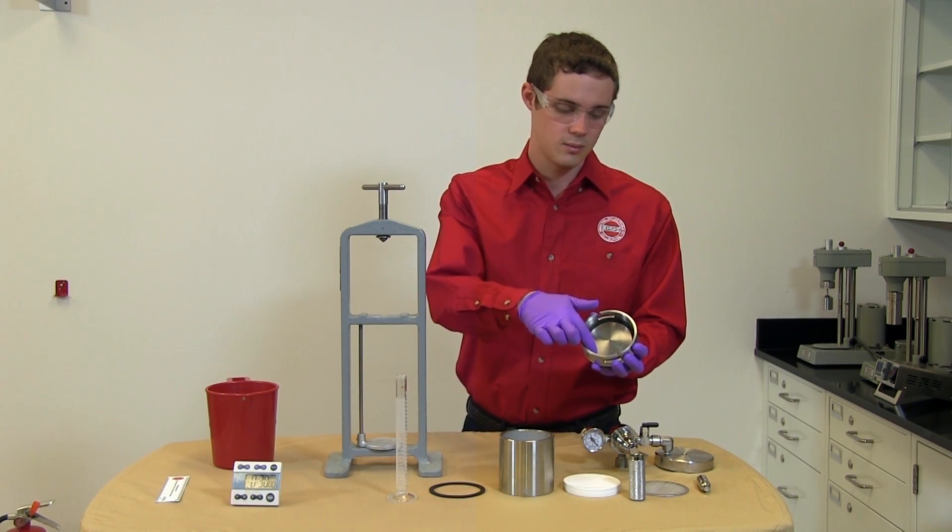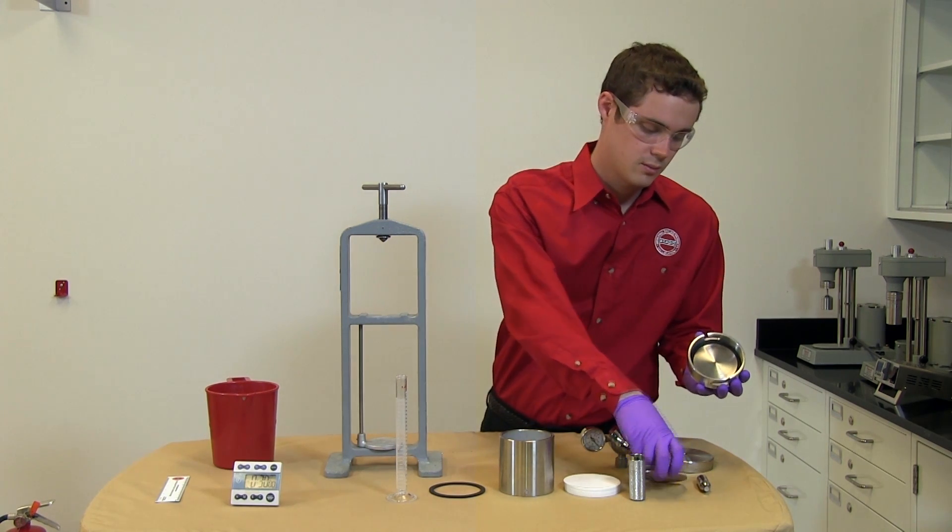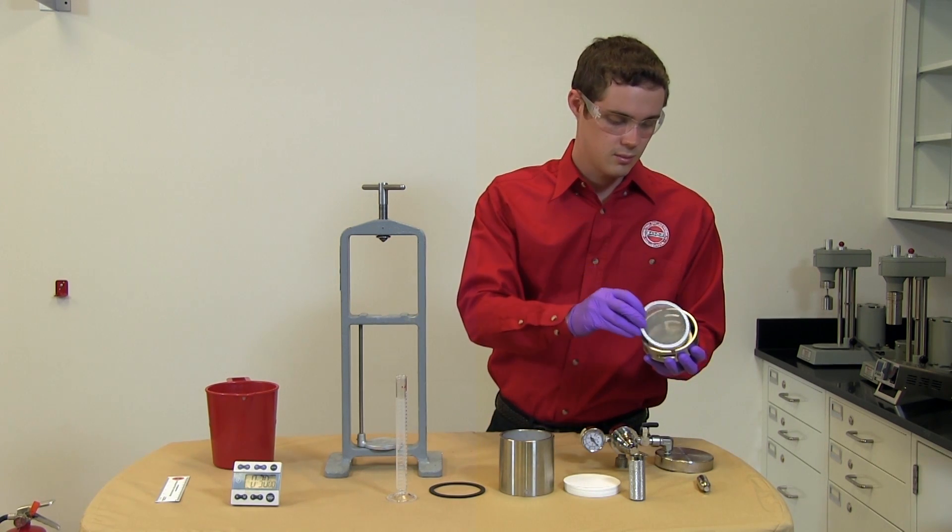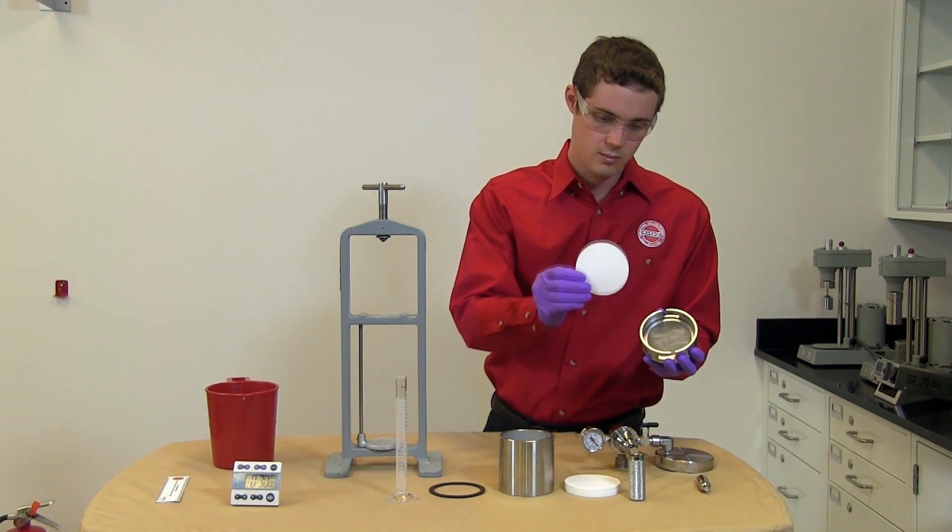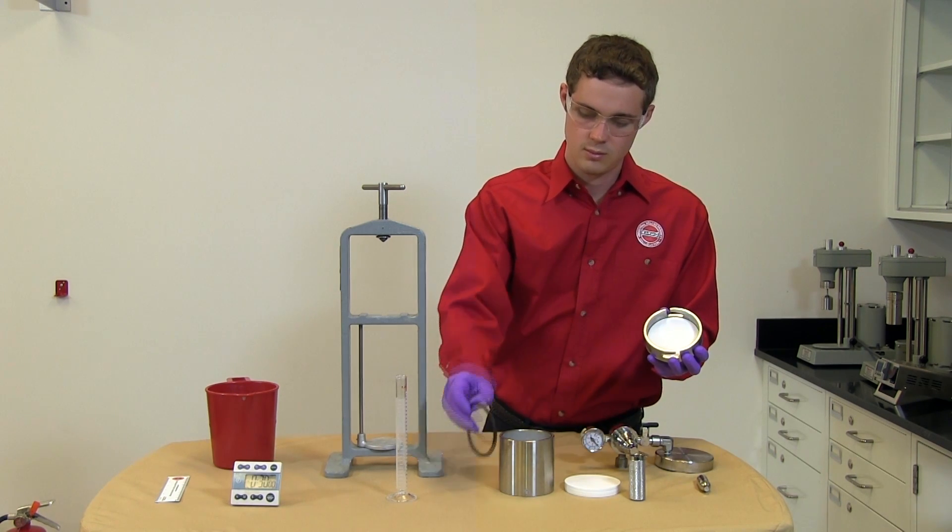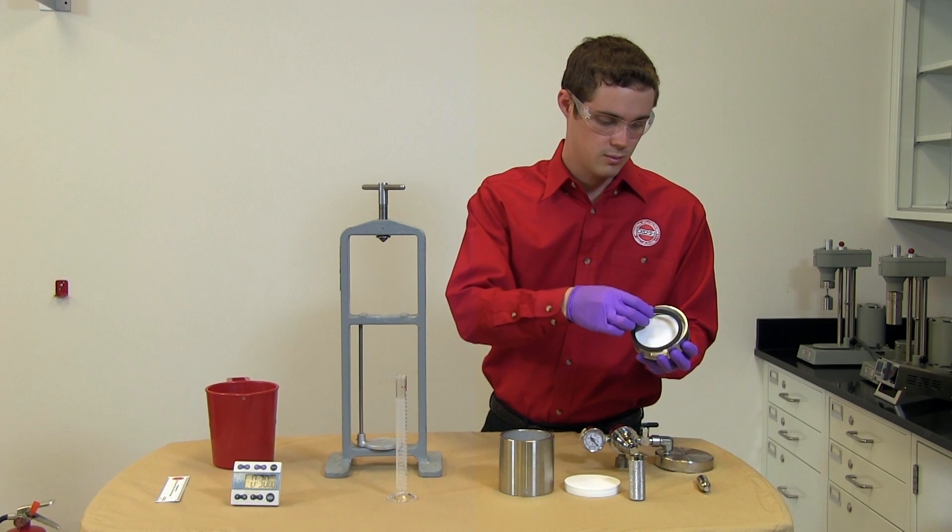We start with the base and we have a gasket inside. We add a backing screen and on this screen we'll put a piece of filter paper. Add a second gasket and attach the barrel.